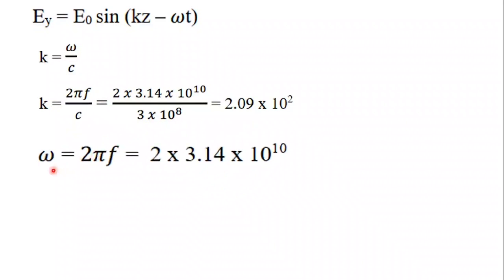For ω, we use ω = 2πf. Plugging in the values: 2 × 3.14 × 10^10. After simplifying, we get ω = 6.28 × 10^10 rad/s.